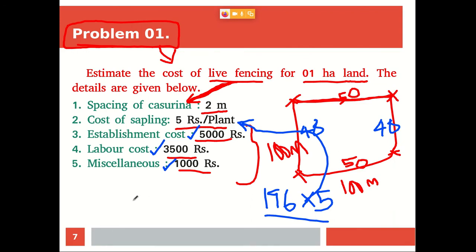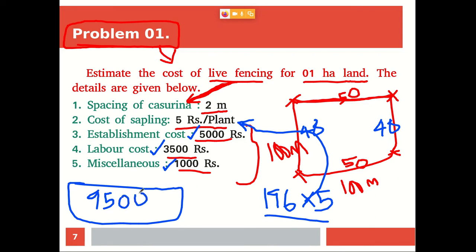Once we find the sapling cost (196 x Rs. 5), we add the establishment cost, labor cost, and miscellaneous cost — which are Rs. 5000, Rs. 3500, and Rs. 1000 respectively, totaling Rs. 9500. Adding the sapling cost to Rs. 9500 gives the total cost of live fencing for one hectare. In your record, you have to write down this problem, draw the map layout, find the plant population, and complete the sum.